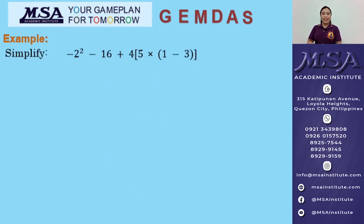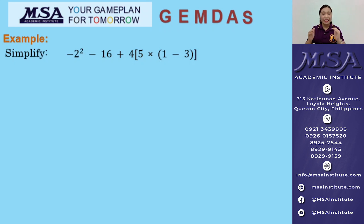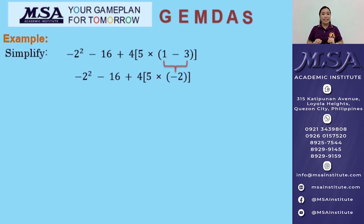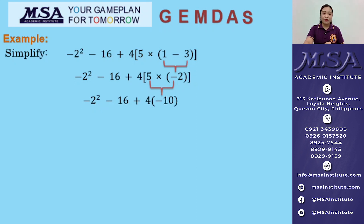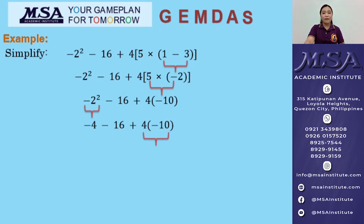Next example. As you can see, we have two grouping symbols: parentheses and brackets. G for grouping — we perform the operation inside the innermost grouping symbol, which is the parentheses. We have 1 minus 3, which equals negative 2. Next, we simplify 5 times negative 2, because they are still inside the grouping symbol. 5 times negative 2 equals negative 10. Then E for exponent: negative 2 squared gives us negative 4. M for multiplication: 4 times negative 10 equals negative 40.